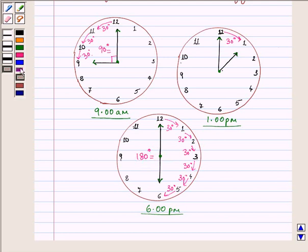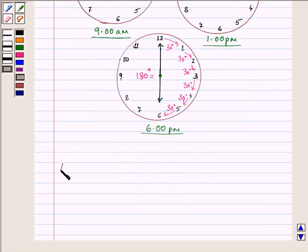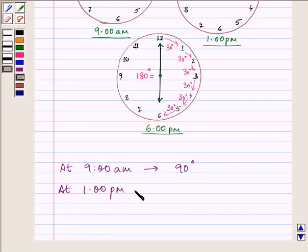Let me write down the answers: At 9am, there was a 90-degree angle formed between the hands of the clock. At 1pm, there was a 30-degree angle. And at 6pm, there was a 180-degree angle.